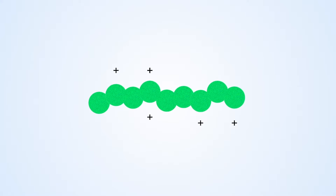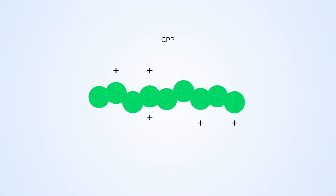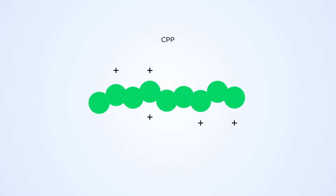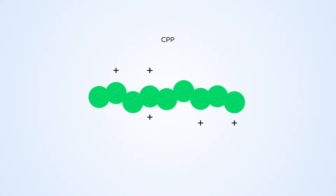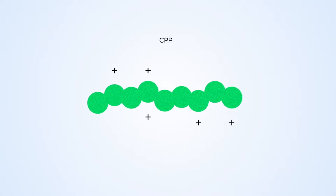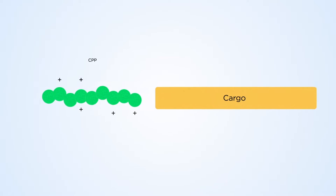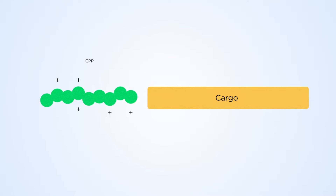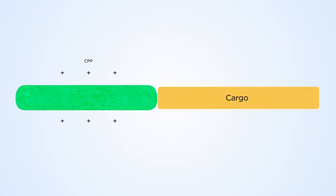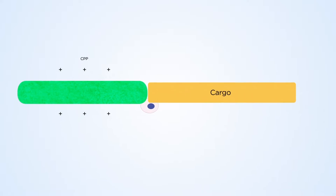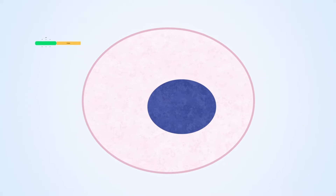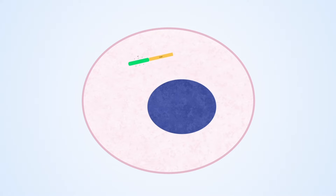Cell-penetrating peptides, CPPs, are short peptides that are cationic, meaning they contain many positively charged amino acids. CPPs have the ability to enter cells and can bring along diverse cargoes for experimental or therapeutic purposes.